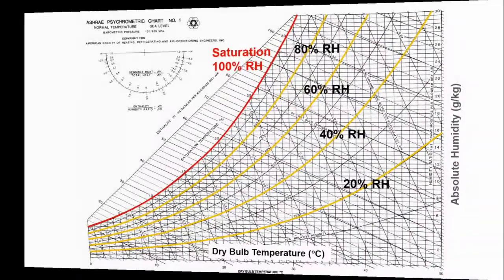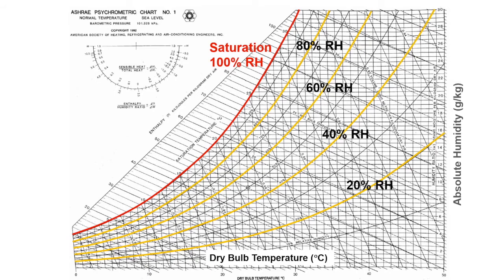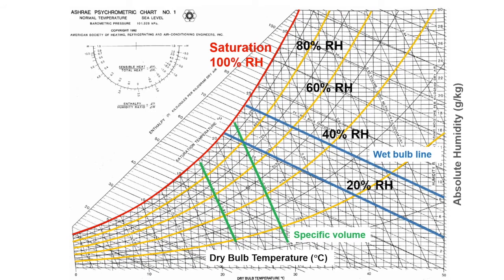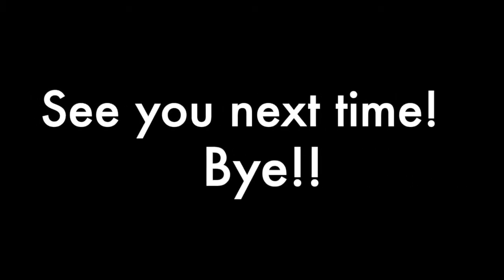There are actually three more sets of lines in the psychrometric chart, namely the specific volume lines, wet bulb lines, and also the enthalpy lines. Stay tuned for our next video when we will talk more about them. Thank you very much for watching. Bye-bye.